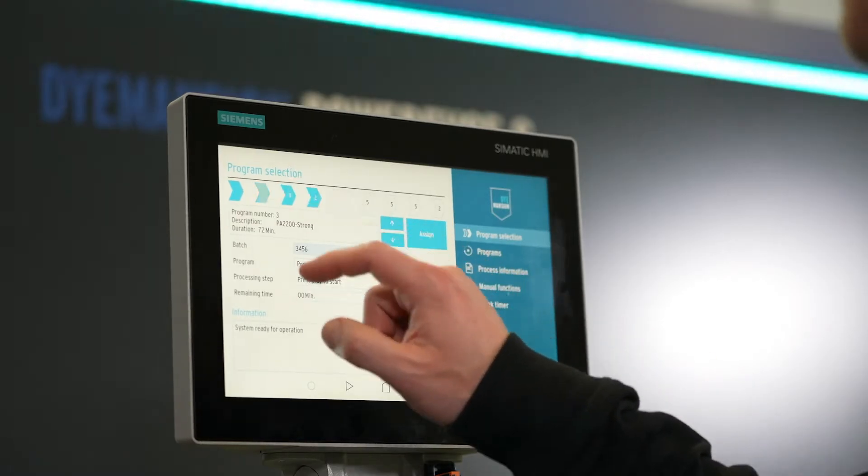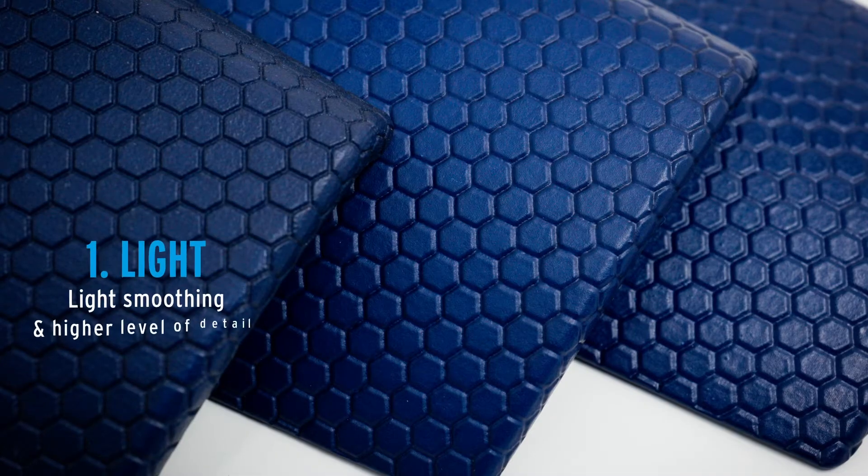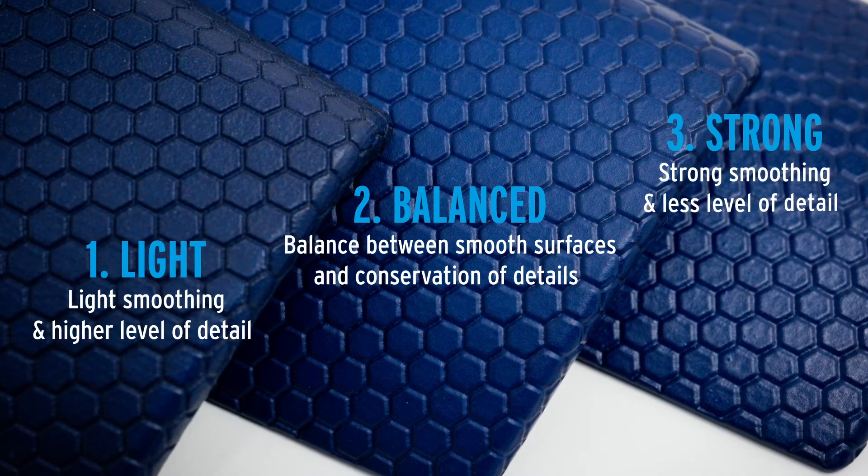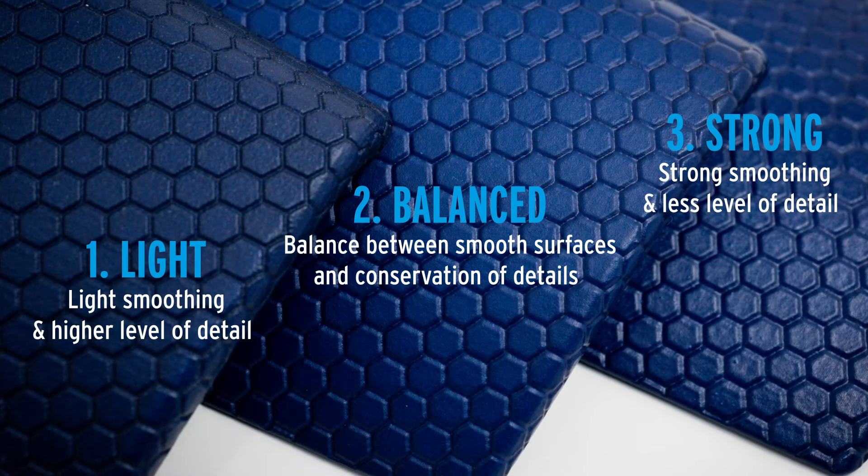Validated and specially developed programs for all common materials are available and ready to use. We've developed three levels of smoothing: light, balanced and strong to be able to adapt all process parameters individually for your application. This ensures flexibility and a seamless integration with existing production processes such as the dimension printed product workflow.